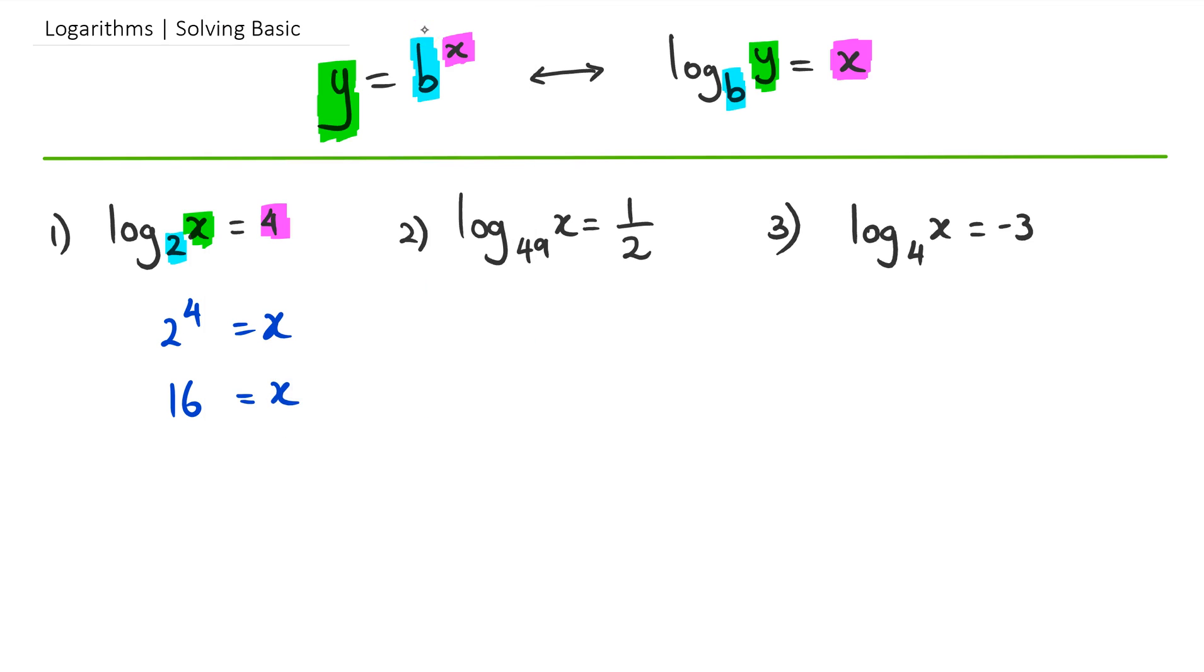Let's go to the next one. Our base in this case is 49, our power is 1/2, and our answer is x. So we rewrite this as 49 to the power of 1/2 equals x. Remember, power to the half is the same thing as saying square root, so this is the square root of 49, which equals x. The square root of 49 is 7.